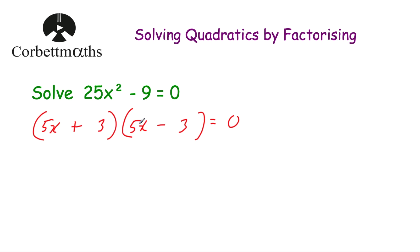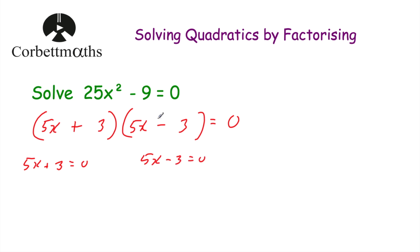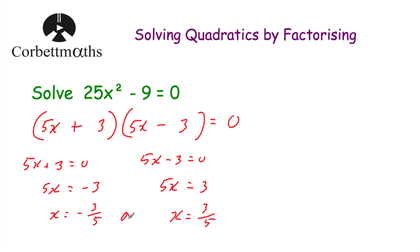Let's check by expanding: 5x × 5x = 25x²; 5x × -3 = -15x; 3 × 5x = 15x; -15x + 15x = 0; 3 × -3 = -9. Fantastic — we've factorized using the difference of two squares. Now to solve: for (5x + 3) = 0, subtracting 3 gives 5x = -3, dividing by 5 gives x = -3/5. For (5x - 3) = 0, adding 3 gives 5x = 3, dividing by 5 gives x = 3/5. So there are two solutions: x = -3/5 or x = 3/5.